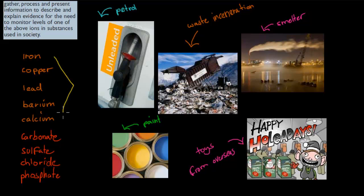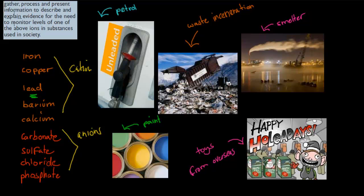Now there's five cations and four anions that we talked about in the last couple of videos. In this video specifically, we're going to cover lead in more detail, because lead is basically the most poisonous of the ones mentioned here.